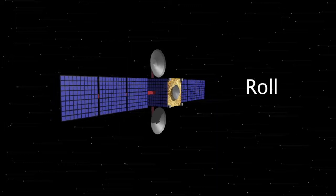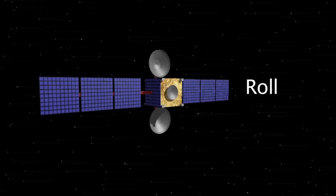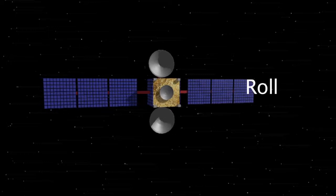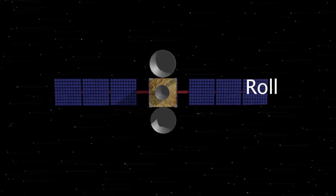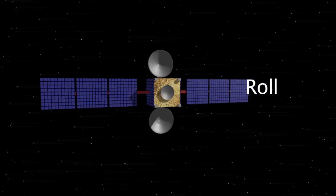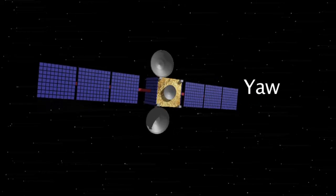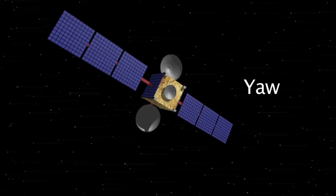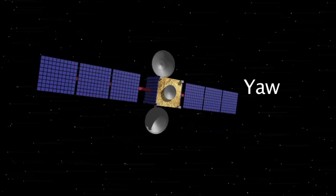A small amount of fuel is always kept in reserve, so as the satellite reaches the end of its lifetime, it can be maneuvered out of geostationary orbit, usually a few hundred miles further out. This leaves another slot for a replacement satellite and makes sure this one does not crash into any others.